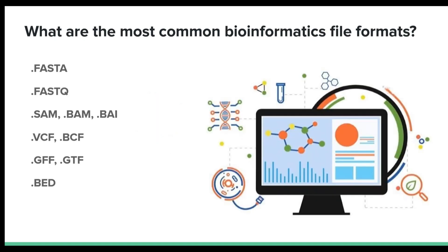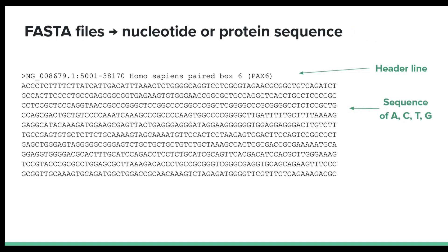So let's take a look at some of the data types associated with these different biological layers. First, let's take FASTA files. FASTA files are used to represent nucleotide or protein sequences. They typically consist of one or more sequence entries, each entry starting with a header line, which begins with an open angle bracket followed by a unique sequence identifier and an optional description. Below the header line we find the sequence data, represented as a series of letters corresponding to the nucleotide or amino acid sequences.